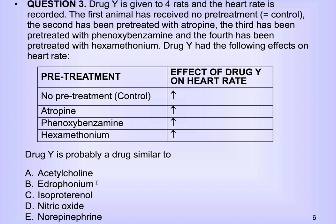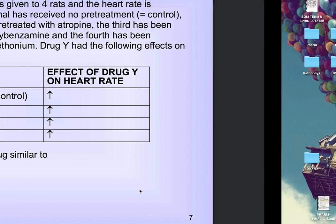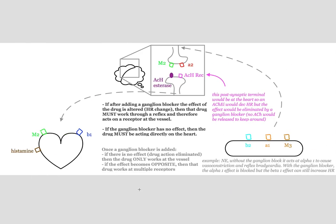So then you can eliminate your other answer choices. We're looking for a direct beta-1 agonist. It can't be acetylcholine. Edrophonium is just going to increase more acetylcholine. Nitric oxide works via M3, so that's not it. And we know that norepi prefers alpha, so that's going to leave us with isoproterenol, because we know that acts at beta-1 and beta-2 receptors specifically.